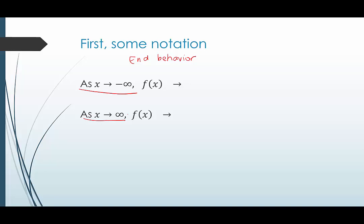Let's think about polynomials that we know — quadratic functions. Quadratic functions might open up like this, in which case we would say as x approaches negative infinity, as it's getting smaller and smaller, notice what's happening: the y value is getting bigger and bigger. So as x approaches negative infinity, f of x approaches infinity. It's getting bigger and bigger, and it's never going to randomly just have a little loop over here at the ends of the graph.